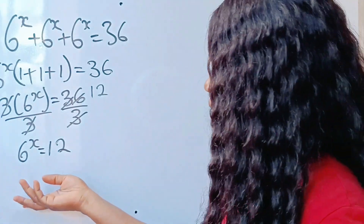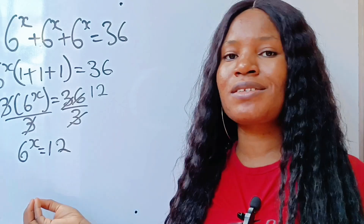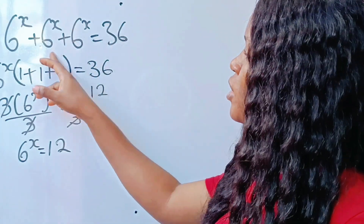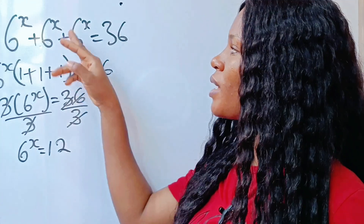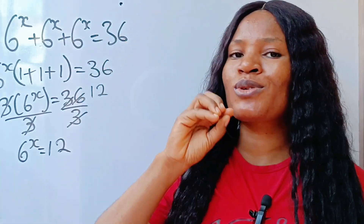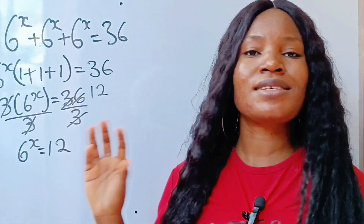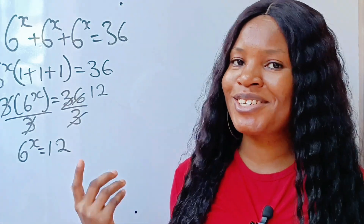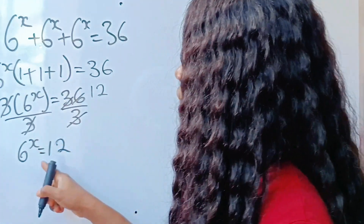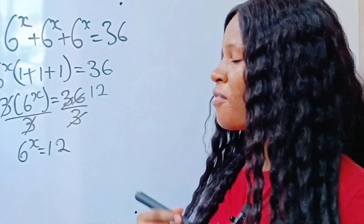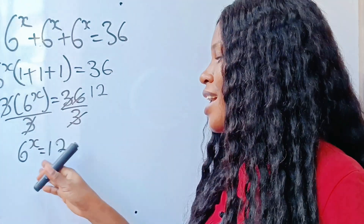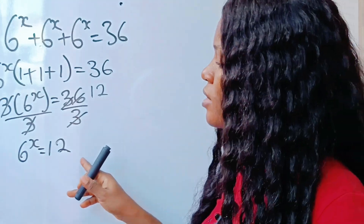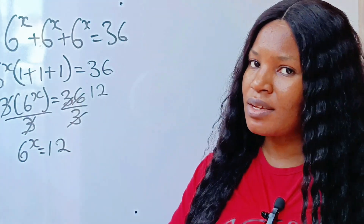The interesting part of this is not even getting the value of x — we are going to substitute it back into the equation to verify the answer, and that is the most interesting part. So stick here, don't touch your dial. Now, 6 to the power of x is equal to 12. We cannot express 12 as a power of 6, so we can't solve this using laws of indices.